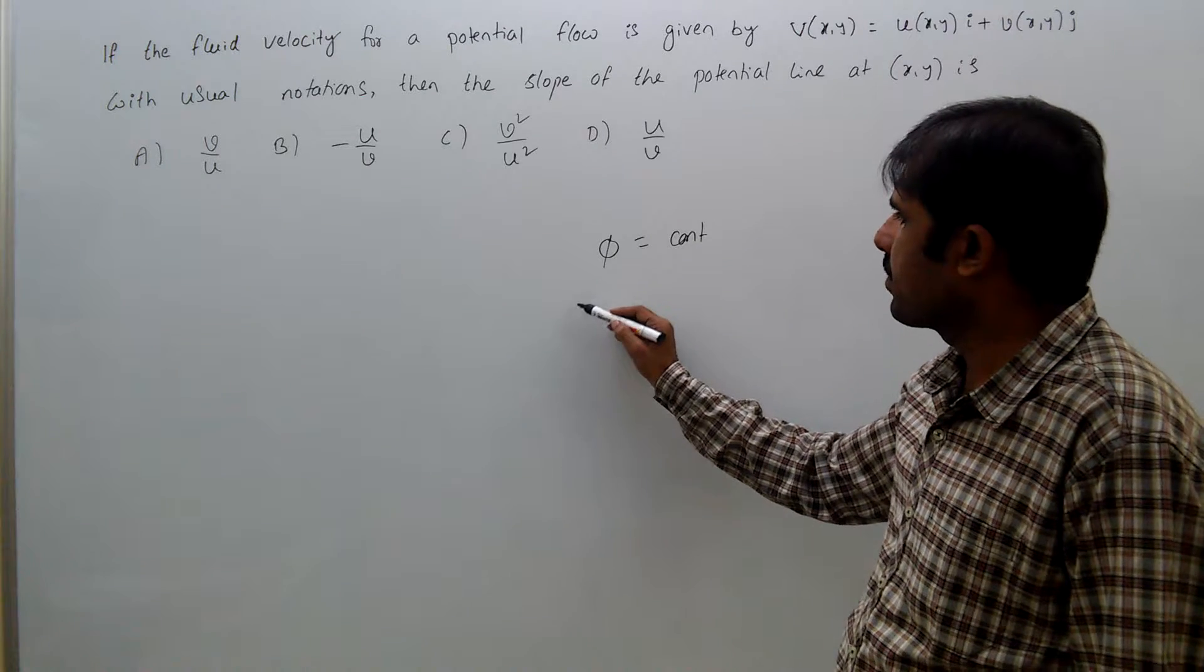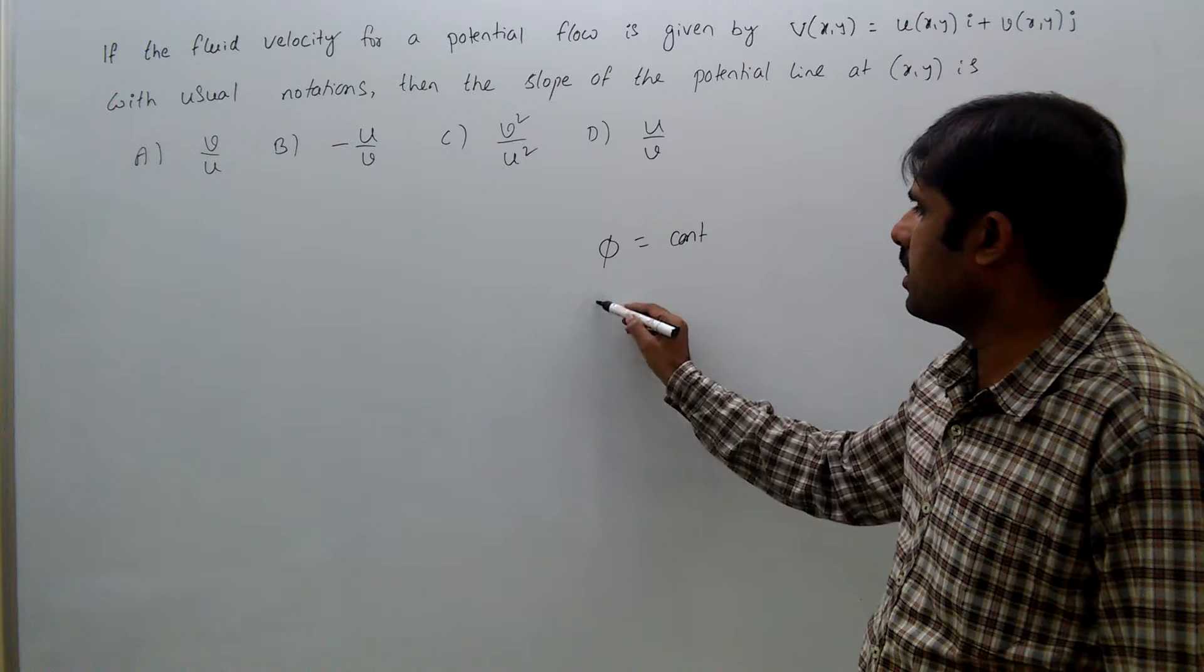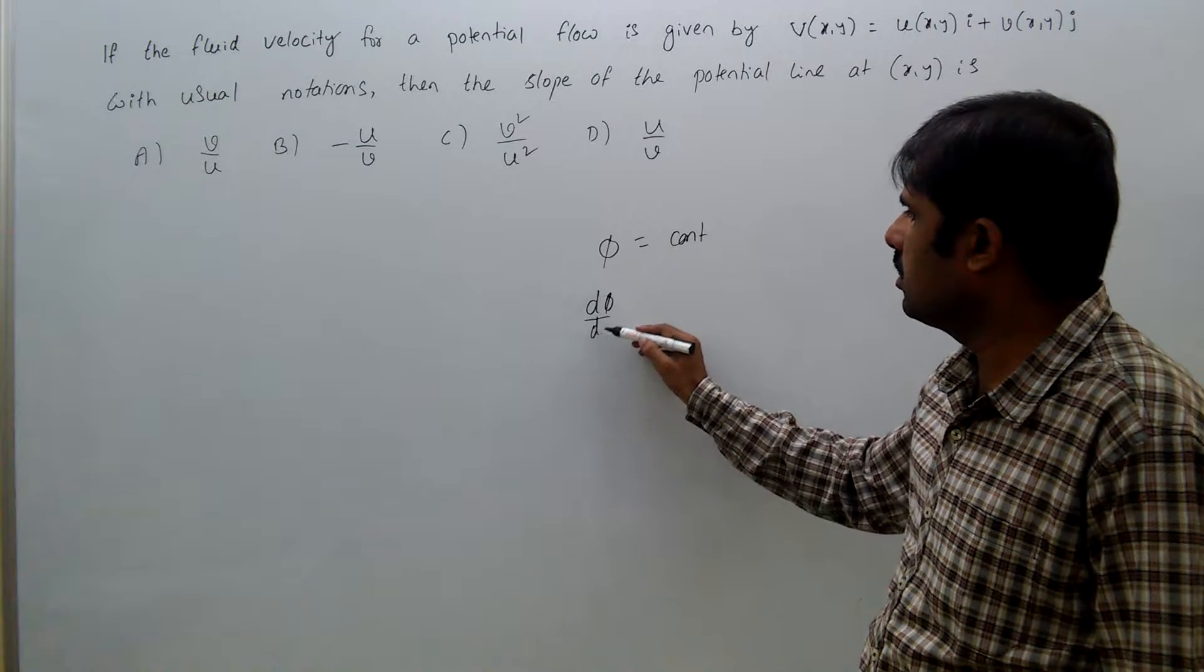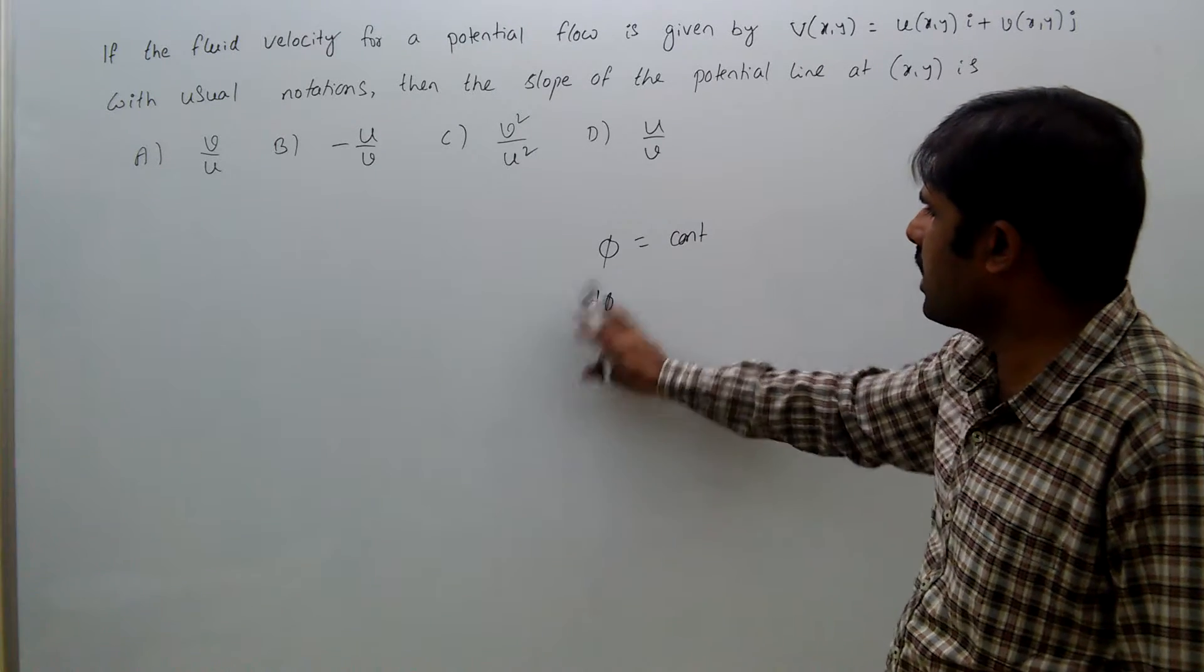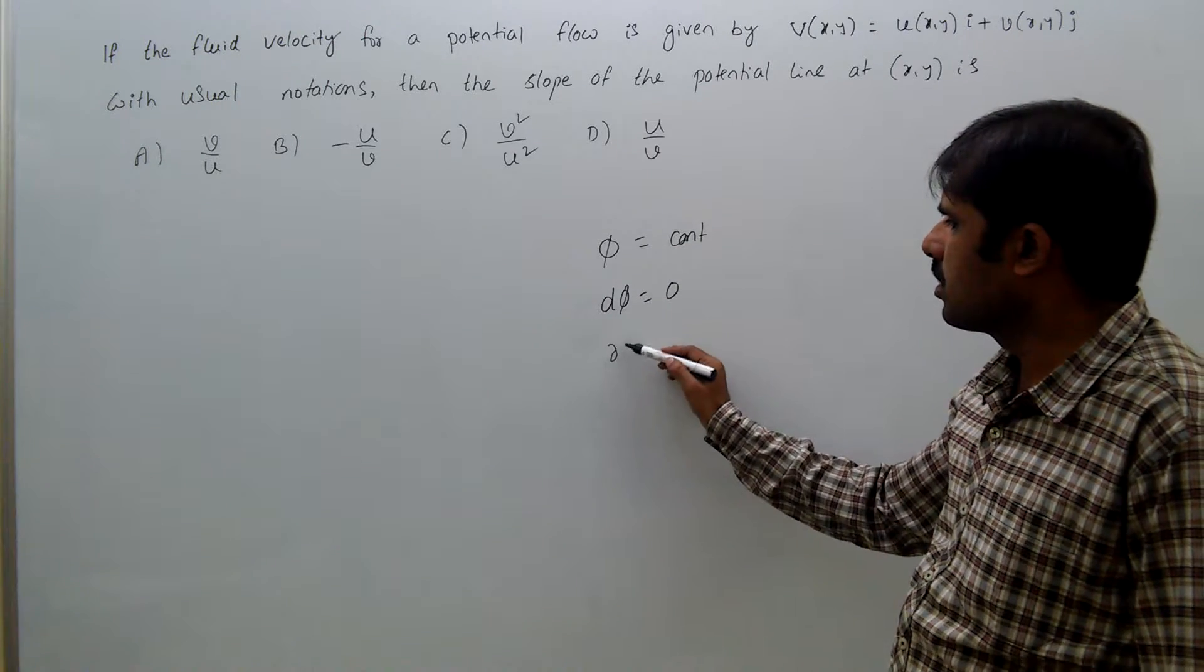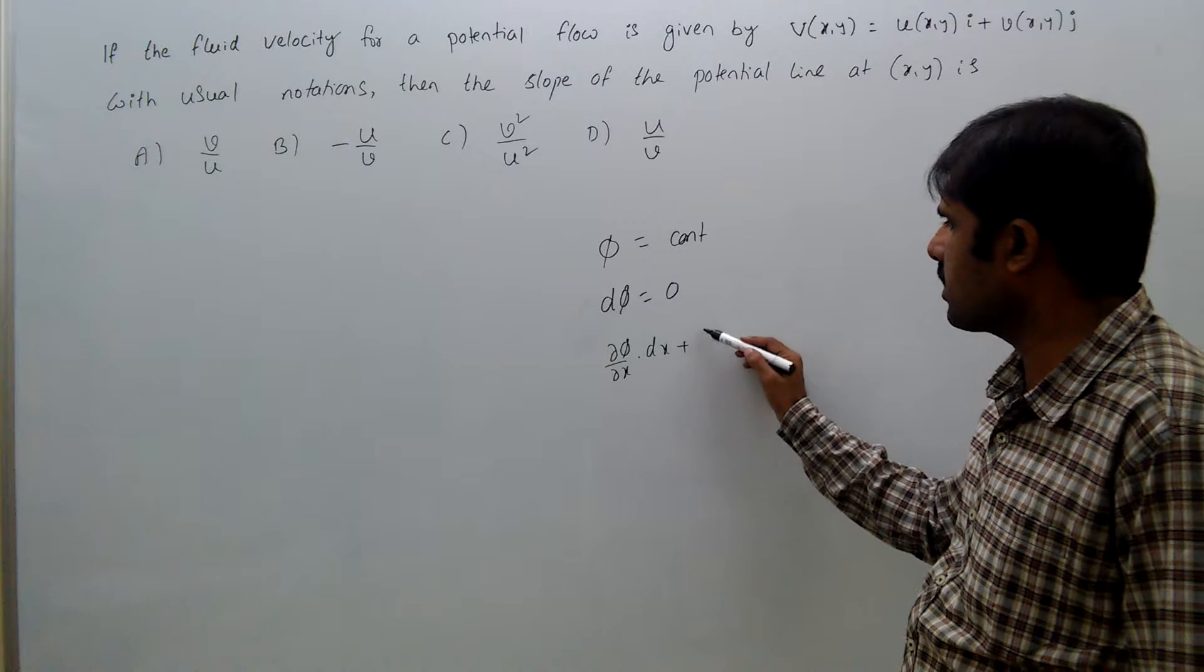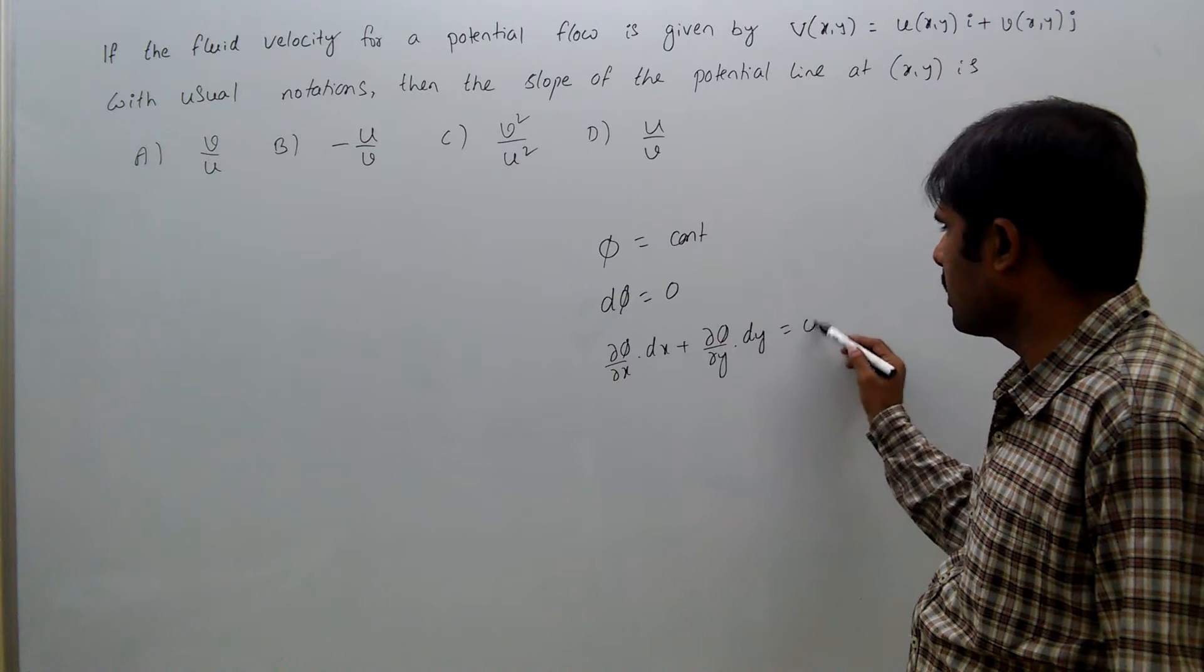That means dφ = 0. φ is constant means dφ = 0. dφ = ∂φ/∂x dx + ∂φ/∂y dy = 0